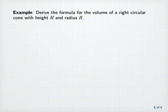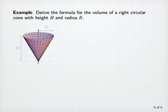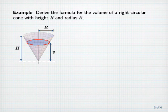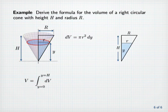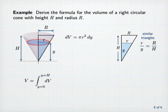Let's look at one last example: derive the formula for the volume of a right circular cone with height capital H and radius capital R. Note that cross-sections perpendicular to the central vertical axis are circular. Let y denote the distance from the vertex. The volume will be the integral of the volume differential dV from y equals zero to y equals capital H. Cross-sectional area will be given by pi times radius squared, so dV equals pi times little r squared dy. We need to express little r in terms of y, so let's look at the central vertical cross-section of the cone. The principle of similar triangles tells us that little r divided by y is equal to capital R divided by capital H.